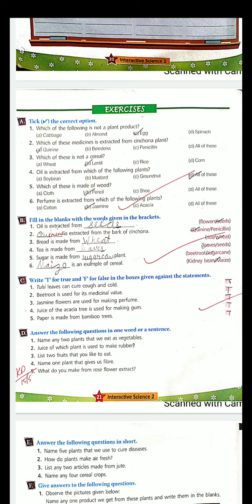Sugar is made from sugarcane plant. I told you we get sugar from sugarcane plant. Dash is an example of cereal. So kidney bean and maize - kidney bean is a pulse. What is the other option? Maize. So what is an example of a cereal? Maize.